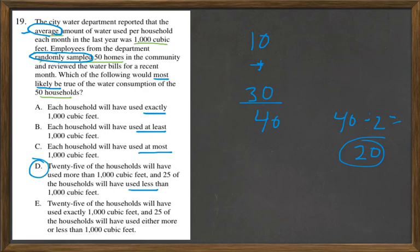Let's look at E and why that's not correct. 25 of the households will have used exactly 1,000 cubic feet, and 25 of the households will have used either more or less than 1,000 cubic feet. And the problem here is that word exactly. The answer is D.